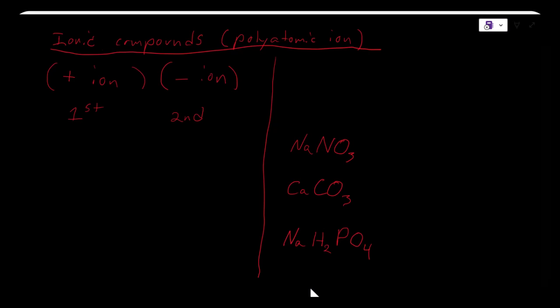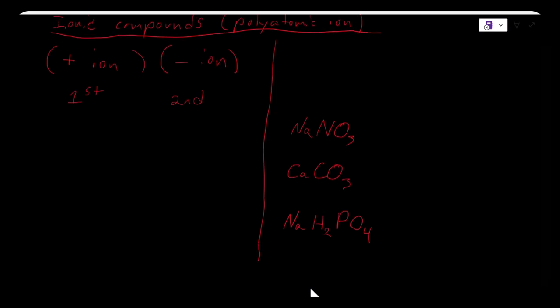We've already went over naming polyatomic ions, so with that information we have everything we need to name this ionic compound. We can split this up and find that the positive ion comes from the sodium atom, so the first part of the name would be sodium. We can find the negative ion right here, and we know this is nitrate because there are three oxygens.